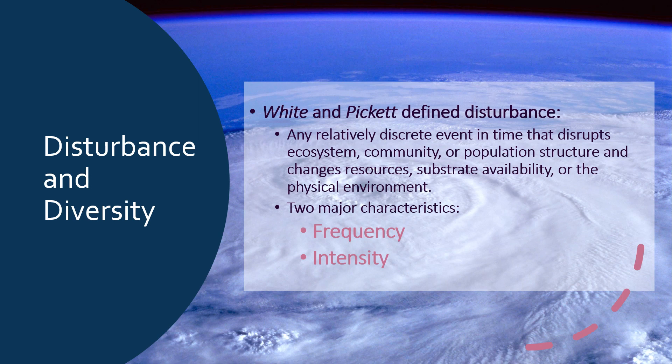A disturbance can be defined by two major characteristics: frequency — how often disturbances occur, so having fires every 10 years versus every 100 years is a very different scenario — and intensity, such as whether a fire is a very hot ground fire or a cooler ground fire that is just clearing off debris on the soil surface.